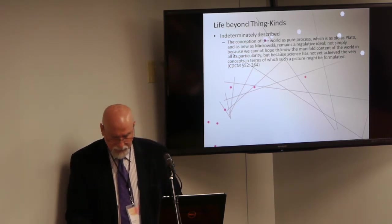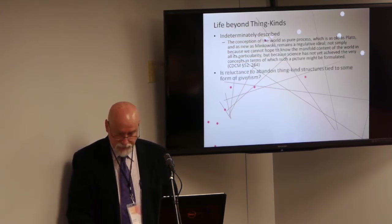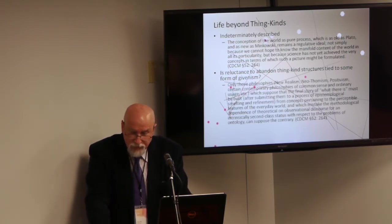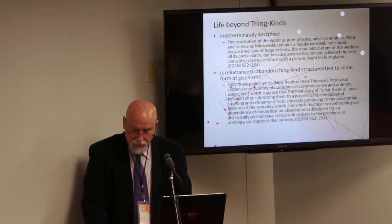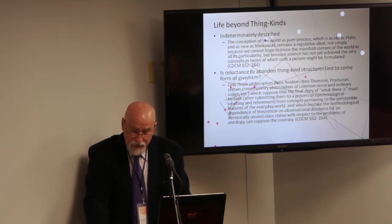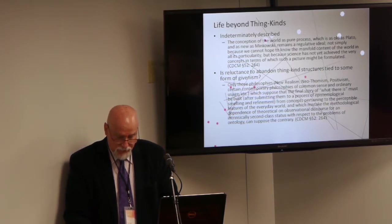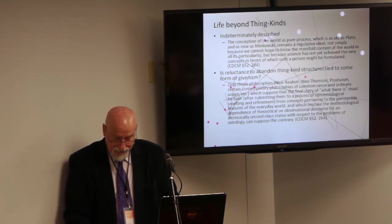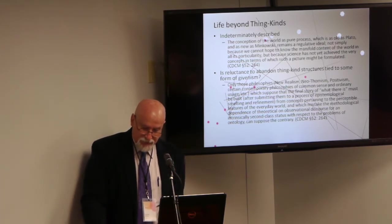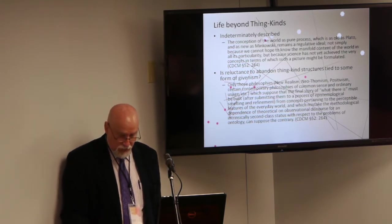Actually that's not such a big problem for me. What I find more problematic is his quick dismissal of his rivals. He tells us only those philosophies, new realism, neotomism, positivism, certain contemporary philosophies of common sense and ordinary usage, which suppose that the final story of what there is must be built after submitting them to a process of epistemological smelting and refinement from concepts pertaining to the perceptible features of the everyday world, and which mistake the methodological dependence of theoretical on observational discourse for an intrinsically second-class status with respect to the problems of ontology, only such people can suppose the contrary. That is, the manifest image can't be dispensed with.